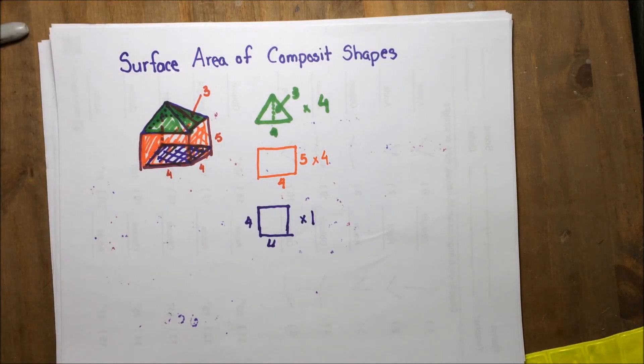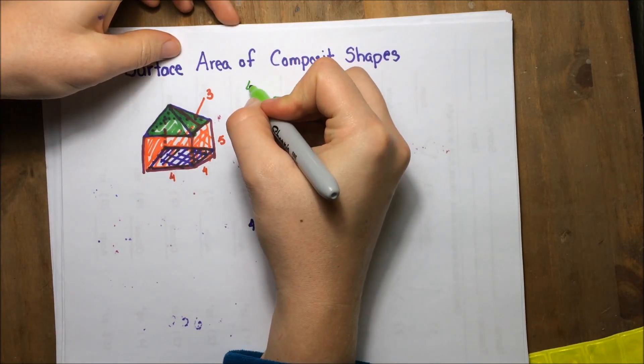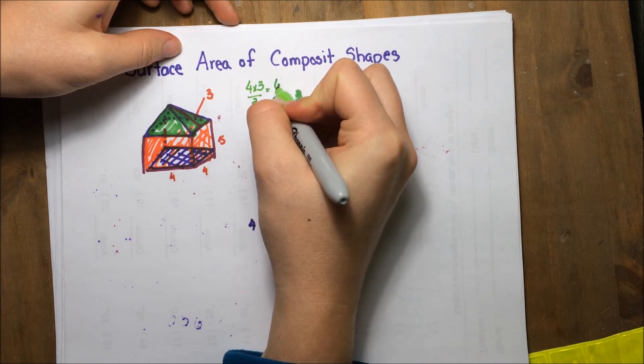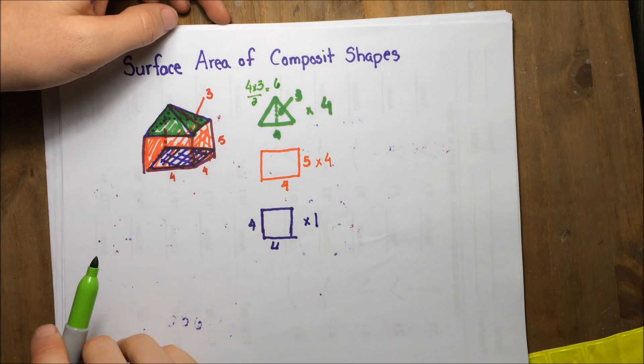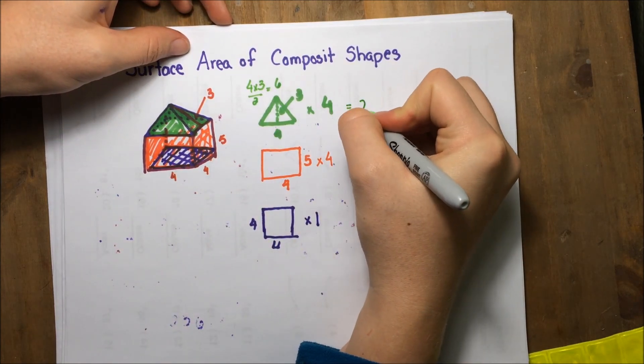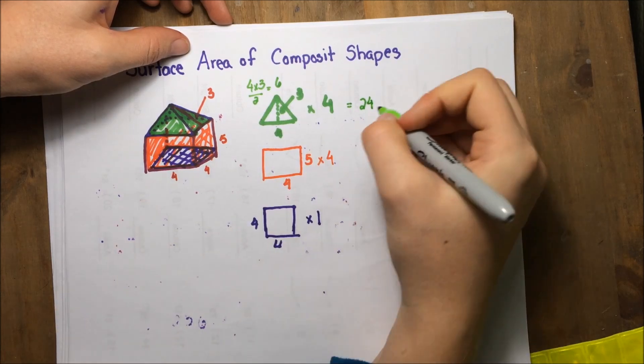Now that I have all of my shapes picked out, I'm going to find the area of each and then multiply it accordingly. On my triangle, I have four times three divided by two, which gives me six. So one triangle is six units squared. I have four of them, it gives me a total of 24 units squared.